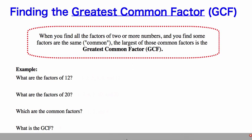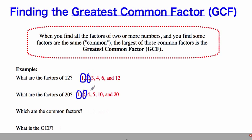We're going to find the greatest common factor of 12 and 20. The factors of 12 are: 1 times 12, 2 times 6, 3 times 4 — so 1, 2, 3, 4, 6, and 12. The factors of 20 are: 1 times 20, 2 times 10, 4 times 5 — so 1, 2, 4, 5, 10, and 20. Now I find the common factors — numbers on both lists. There's a 1 on both, a 2 on both, and a 4 on both. The other numbers are not common between 12 and 20. So the common factors are 1, 2, and 4. The greatest just means the biggest number, so the GCF of 12 and 20 is 4.